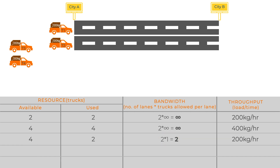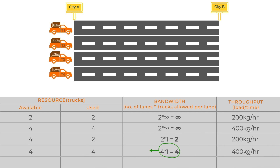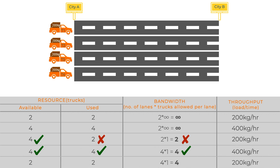If the road increases to four lanes, with one truck per lane and four trucks available, you can again achieve 400 kg per hour throughput because bandwidth has increased. The key point: if you have higher bandwidth and resources to utilize it, you can achieve higher throughput. But if bandwidth is low, throughput is capped by it. Conversely, if you have four lanes but only two trucks, throughput is capped at 200 kg per hour — limited by the resources, not the bandwidth.